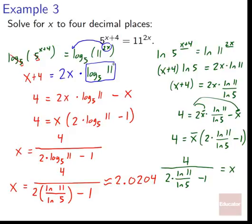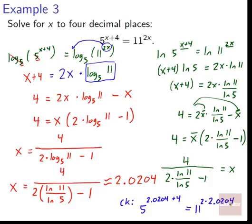There are several ways to approach this problem — remember all the properties and work through carefully. At the very end, do a quick check: 5 to the 2.0204 plus 4 should equal 11 to the 2 times 2.0204. They'll come out very close; any difference after the fifth or sixth digit is just rounding error from using only four decimal places.